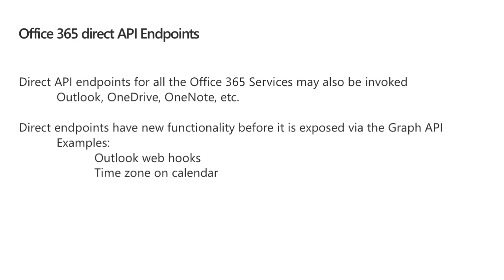Office 365 has some direct API endpoints for all the different services you may invoke, like Outlook, OneDrive, or OneNote. Direct endpoints get new functionality before it's exposed to the Microsoft Graph API — things like Outlook webhooks or time zones on a calendar get those first. However, those things will eventually make it to the Microsoft Graph. So the Microsoft Graph acts as a proxy to these other endpoints, but you may see functionality show up in direct endpoints first.